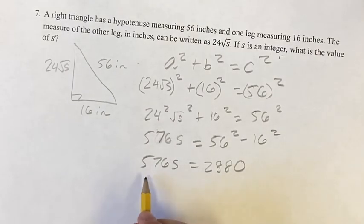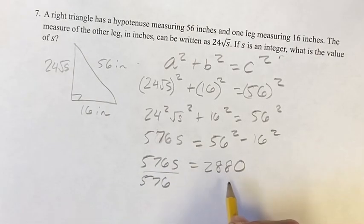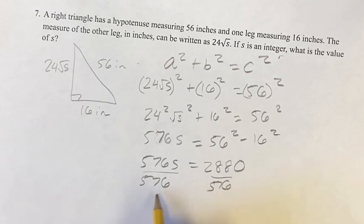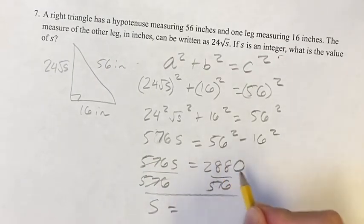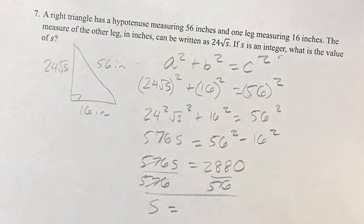And now we can just solve for s easily by dividing both sides by 576. Because these will cancel, we get s is equal to this, 2,880 divided by 576,